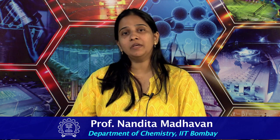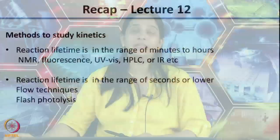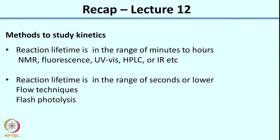Welcome back. In the last lecture we had looked at methods to study reaction kinetics, and specifically we had looked at how you can measure the concentration of the reactant or product over time. Methods are dependent on the time scale of the reaction. If the reaction lifetime is in the range of minutes to hours, you can use methods like spectroscopy, NMR spectroscopy, fluorescent spectroscopy, etc., to figure out the concentration of the species over time.